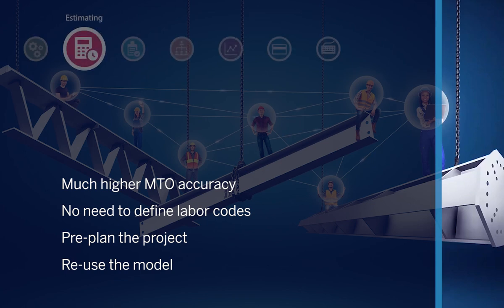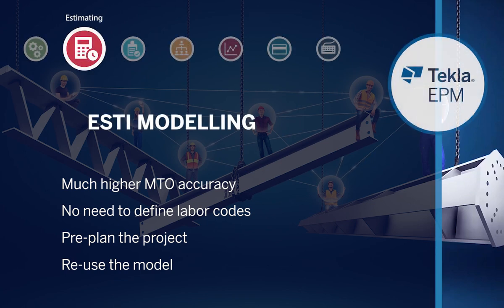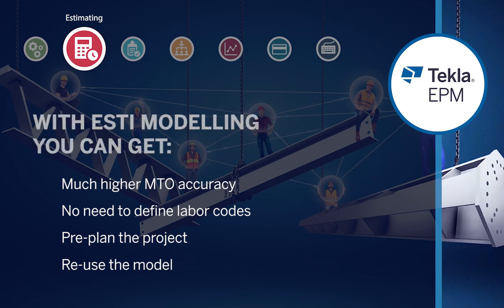The other method to create an estimation job is ST modeling, which is basically modeling the project in Tekla Structures EPM Modeler and then importing the accurate quantities and operations into Tekla EPM Estimation Module. With ST modeling, you can get much higher MTO accuracy and leverage the auto connection concept. No need to define labor costs, as Tekla EPM reads the cut, punch, and weld operations from the Tekla model. You can easily pre-plan the project and know what equipment is needed, and reuse the model after winning the bid.